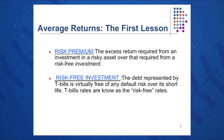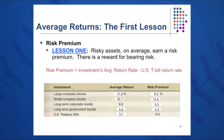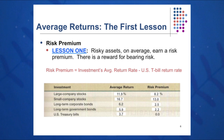From these numbers, we can also calculate the risk premium. Risk premium is the excess return required from an investment in a risky asset over that required from a risk-free investment. The risk-free investment being the Treasury bill rate, we simply subtract the T-bill rate of 3.7% from the average returns to come up with the risk premium. So large company stocks average 11.9%, minus 3.7%, gives us a risk premium of 8.2% on large company stocks.